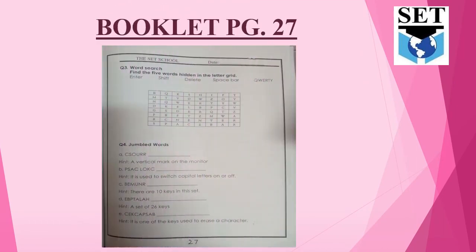Open your booklet page number 27. In page 27, Question number 3 says: Find the five words hidden in the letter grid. In the word search grid, five key names are hidden which you have to search and highlight. Below that, Question number 4 has jumbled words - key names are written in jumbled form and we need to write the accurate key names. Hints are also given below.